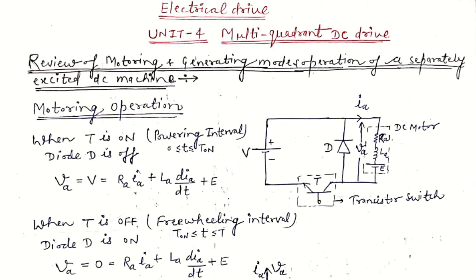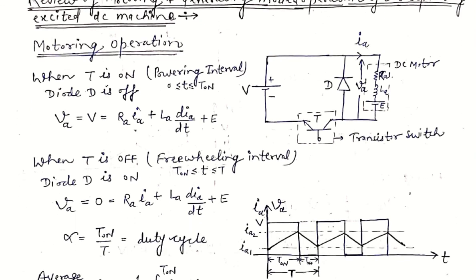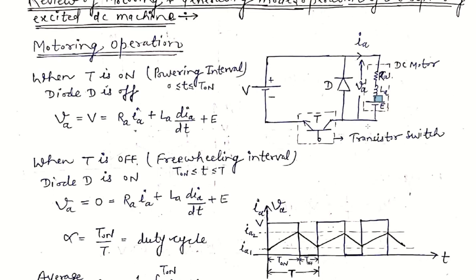During the powering interval, the diode is reverse biased by supply V, so the full DC voltage is applied to the input of the DC motor: V_A = V = R_A·i_A + L_A·(di/dt) + E. When the transistor switch turns OFF, the freewheeling diode comes into action and freewheels the load current in the same direction. From T_on to T, this is the freewheeling interval. Since the diode is ON, the output terminals are short-circuited by the diode, so V_A = 0. We write the KVL equation in the RLE load accordingly. Here, α = T_on / T is the duty cycle.